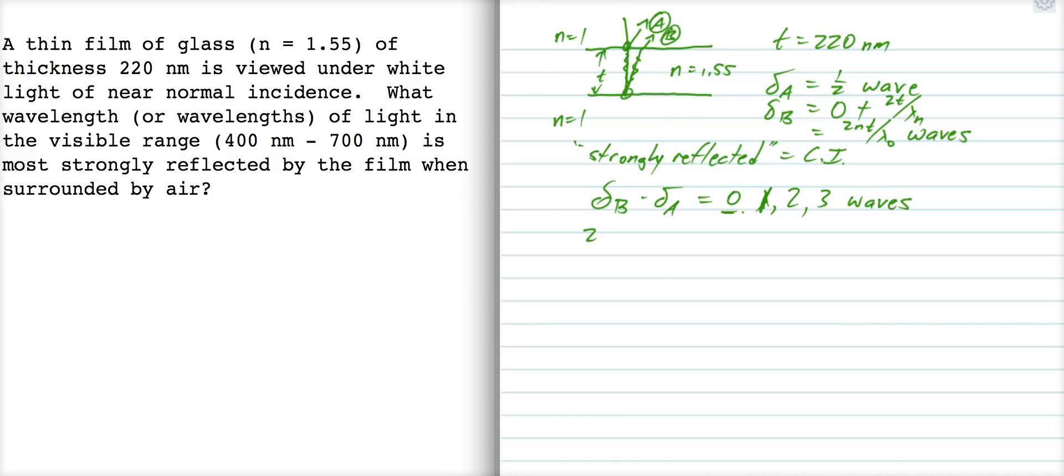So, if we set 2nT over lambda naught minus a half equal to 0, what happens? Well, we get 2nT over lambda naught equals a half, which gives us lambda naught equals 4TN, which is 1364 nanometers. Well, that's no good. Alright, we want light that's in visible range from 400 to 700 nanometers.